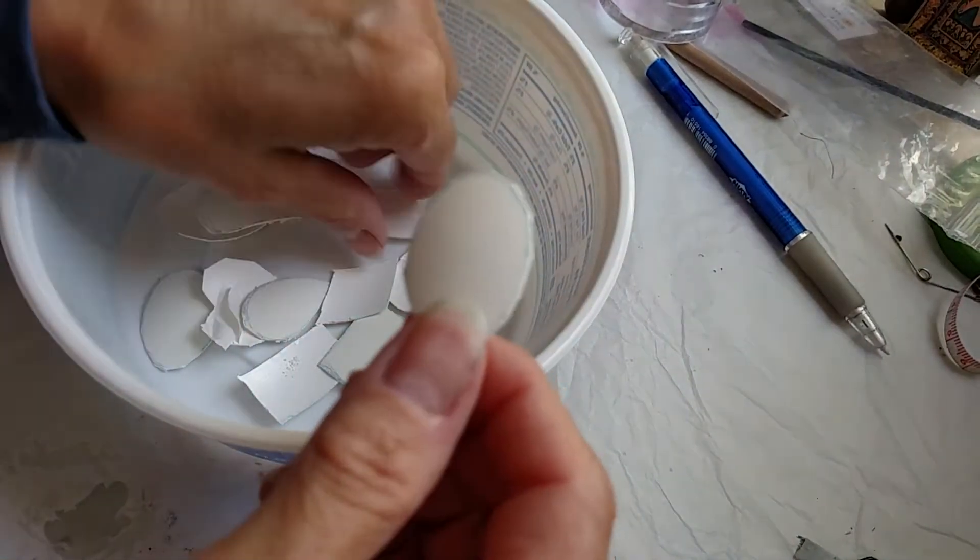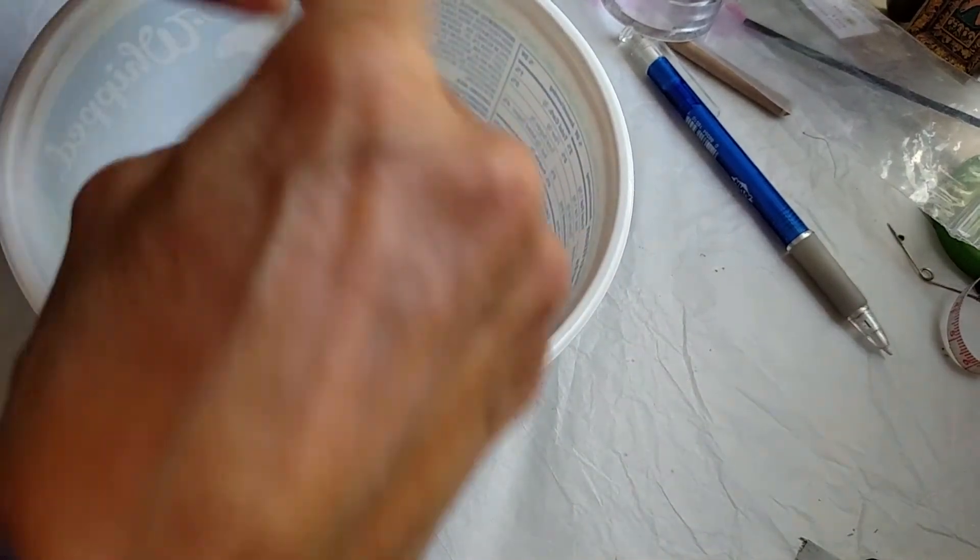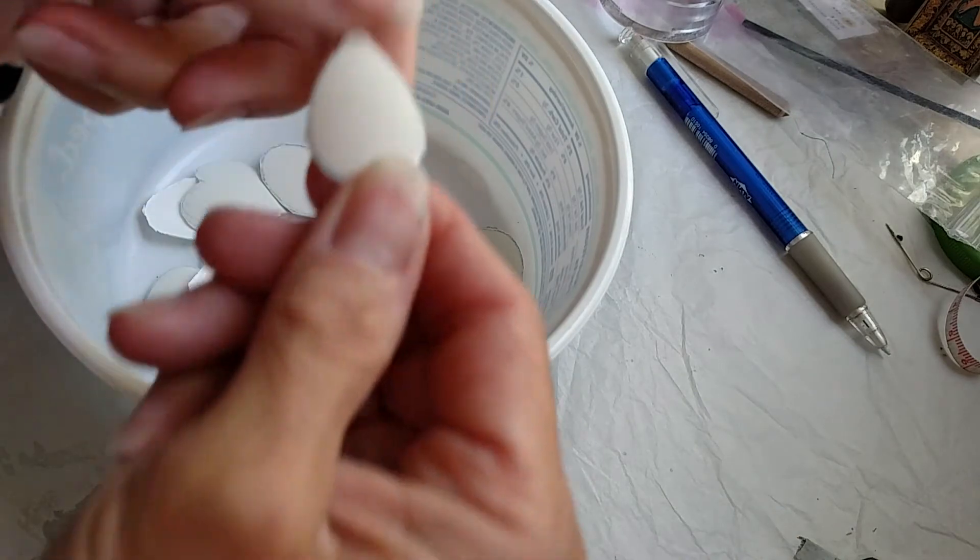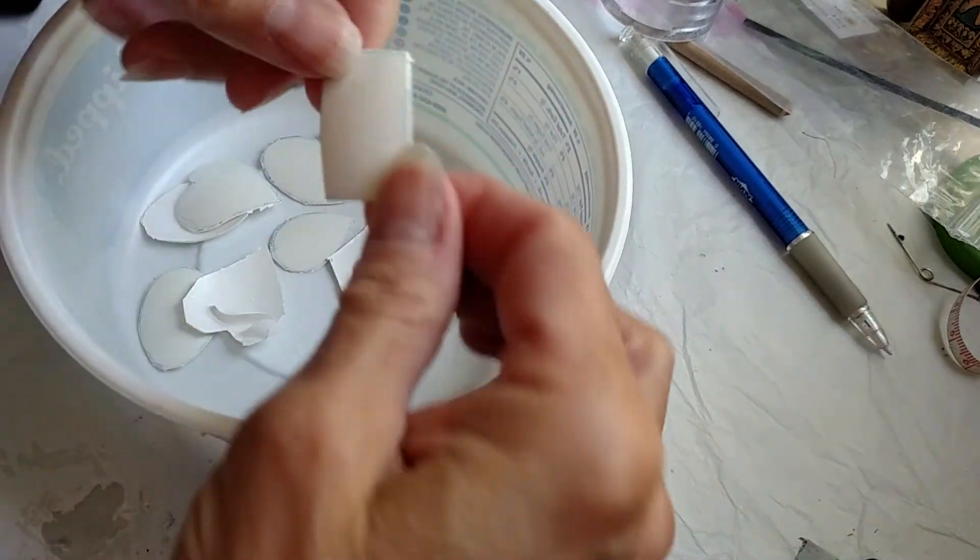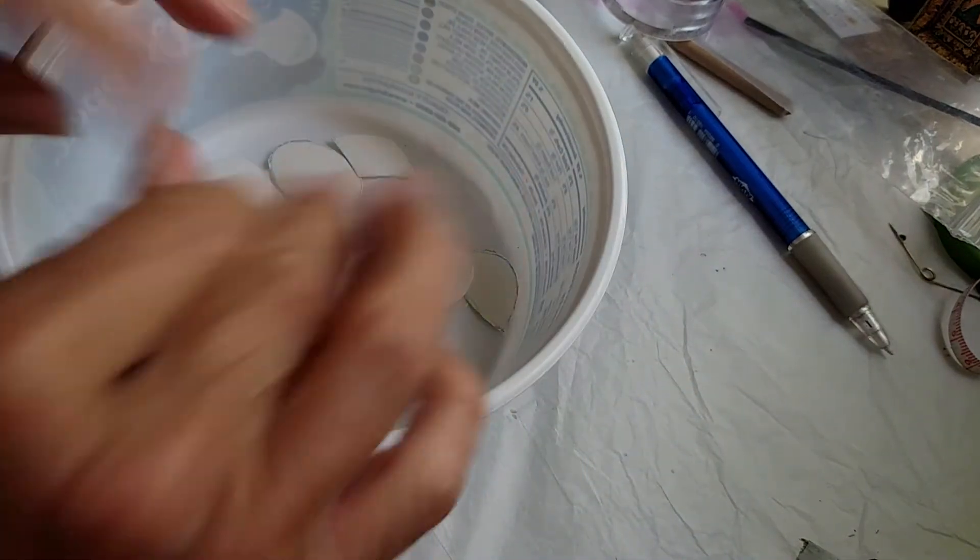And oval, there's a diamond, there's a teardrop, and there is a rectangle.